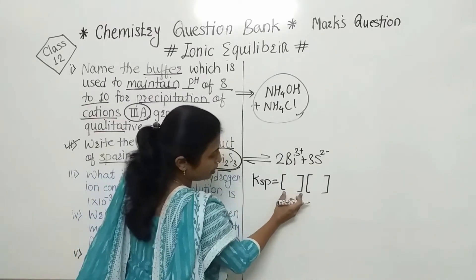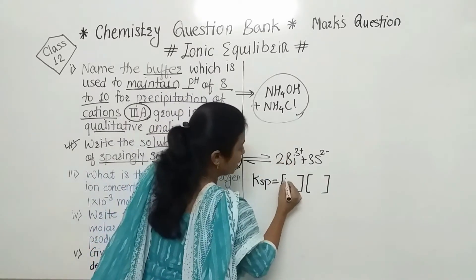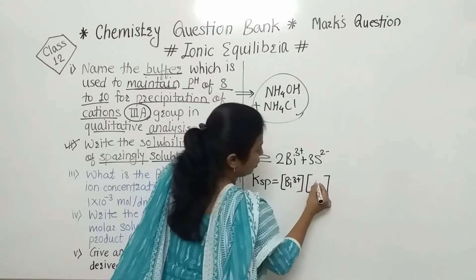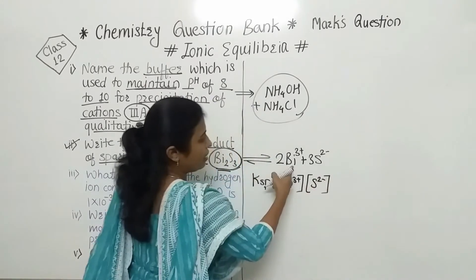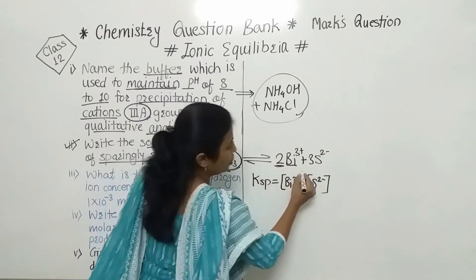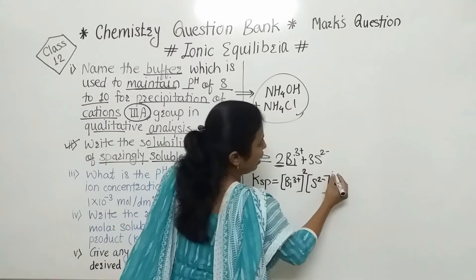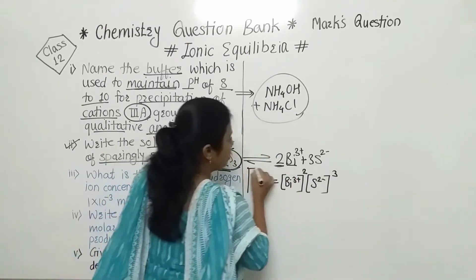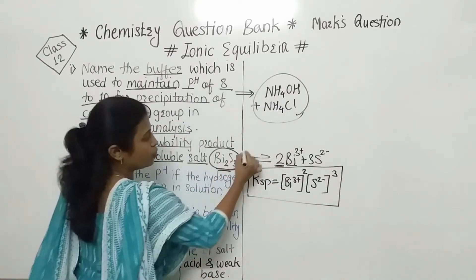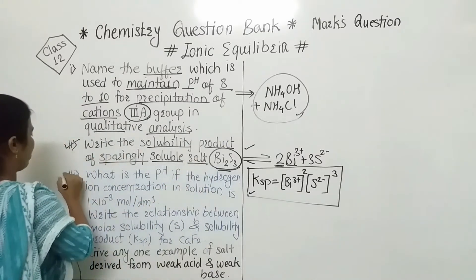Here we use square brackets to indicate concentration. First one is Bi³⁺ and the second one is S²⁻. Since there are 2 moles of Bi³⁺, we take it to the power 2, and since there are 3 moles of S²⁻, we take it to the power 3. In this way we write this reaction and formula, and here we get the 1 mark.